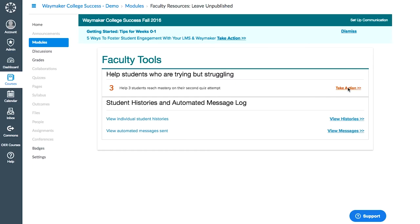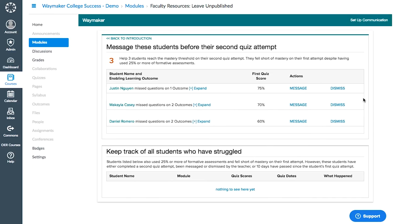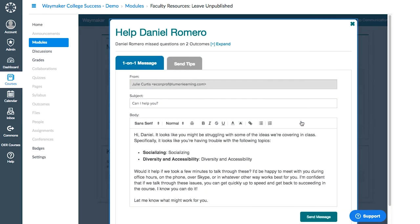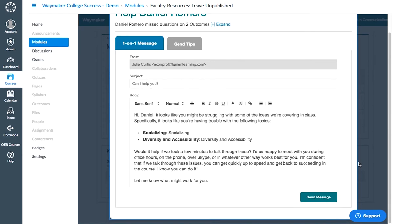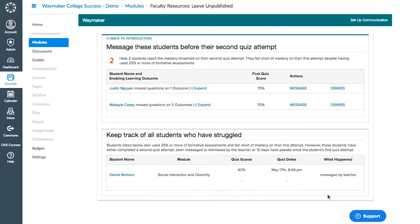Waymaker tools allow faculty to very quickly see which students need help and specifically which topics they need help with. The Waymaker messaging tools provide faculty with templated messages that are auto-populated by the system with data for each specific student. This makes it very quick and easy for faculty to reach out to individual students and provide them with additional support.